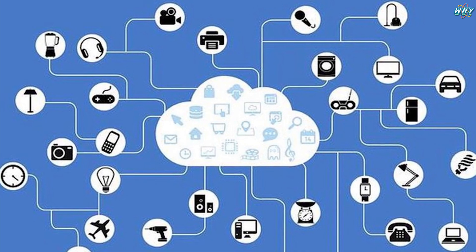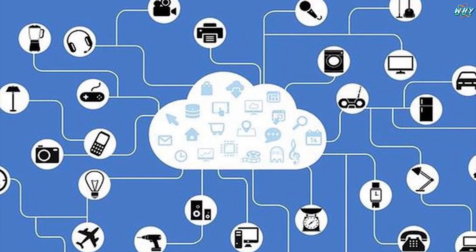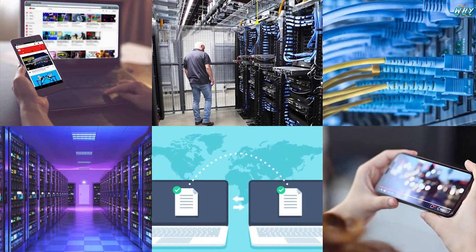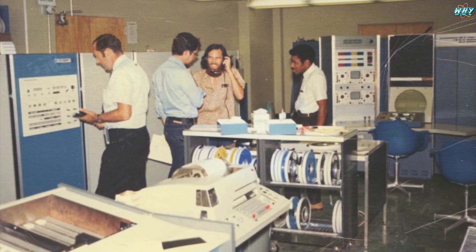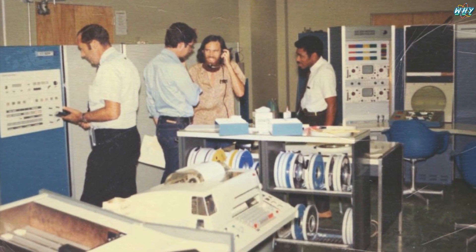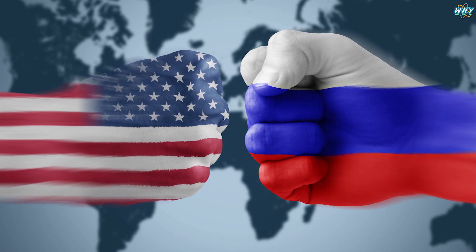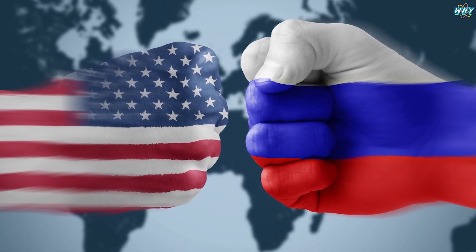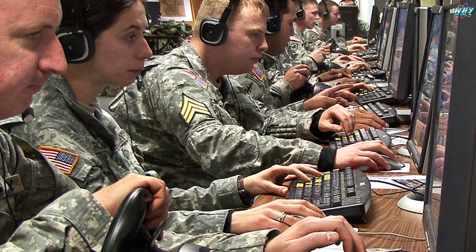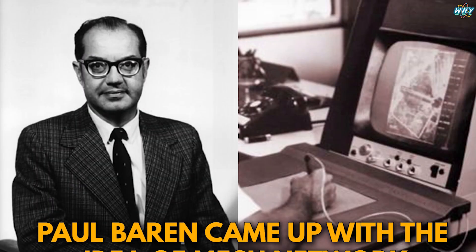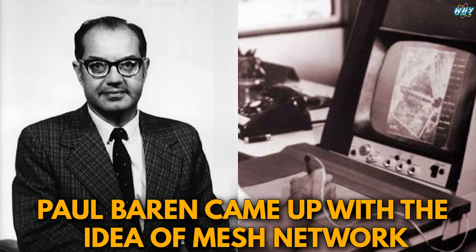Now let's understand who invented the internet and why. The most important context is the Cold War period between America and Russia. For the American military, strong and secure communication was needed. Scientist Paul Baran came up with the idea of a mesh network. But for some reason, it remained just an idea at the time.